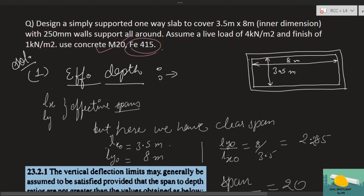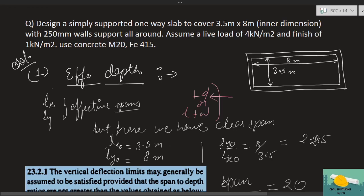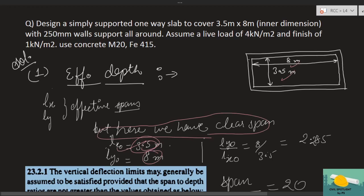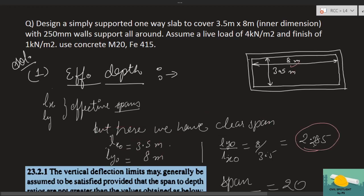Use M20 and Fe415. Let's apply what we've studied. We know that if the ratio of effective span is greater than 2, it is a one-way slab. But here we can't directly find the effective span because for that we need the formula l + d or l + w, and we don't yet have the effective depth. So first we must fix the effective depth, then find the effective span. For approximation, we start with clear span: 3.5 and 8. Their ratio is 2.285, which is greater than 2 — so yes, this is a one-way slab.